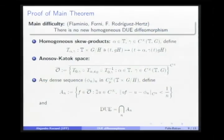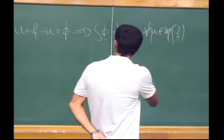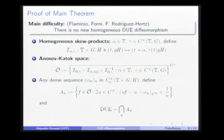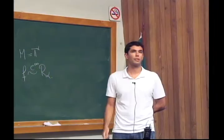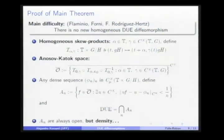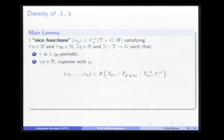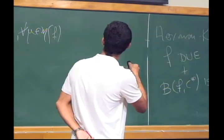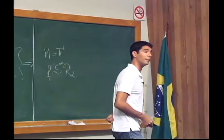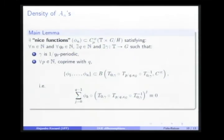This is rather classical: you take the closure of conjugacy classes of these translations, and typically you can show that DUE diffeomorphisms form a G-delta set. The problem is that in most cases we expect this G-delta set to be empty. Essentially what you do is take a sequence of functions which is dense on the space of functions with zero integral with respect to the Haar measure on the homogeneous manifold, define the corresponding sets, and one can easily show that the intersection of these sets coincides with the space of DUE diffeomorphisms.